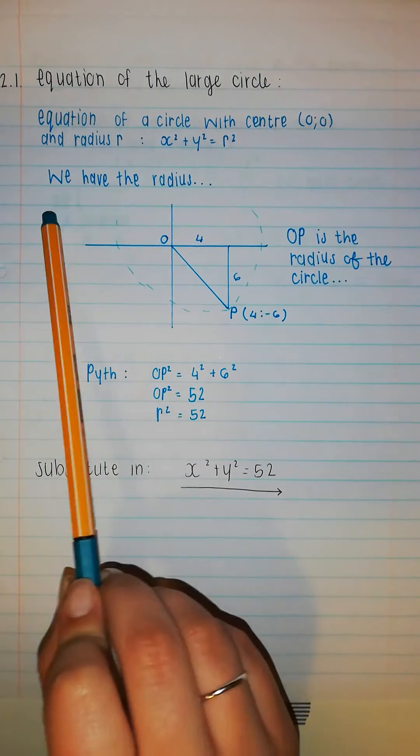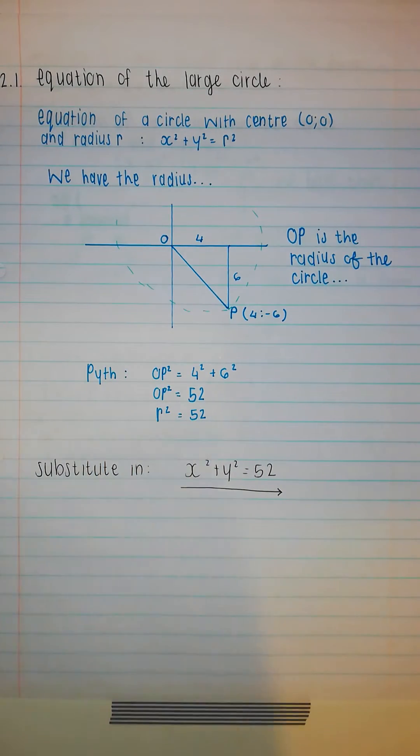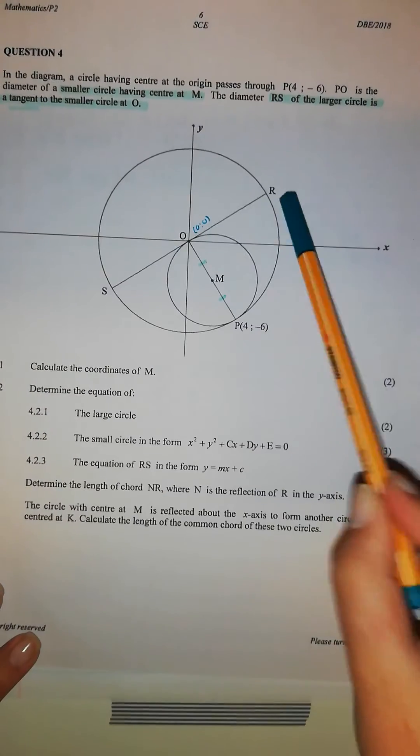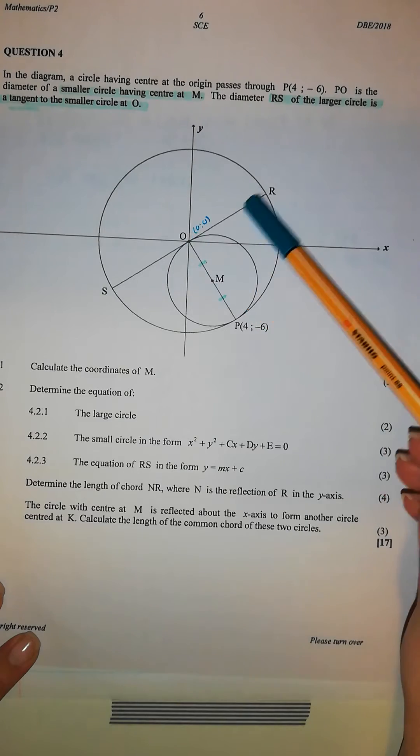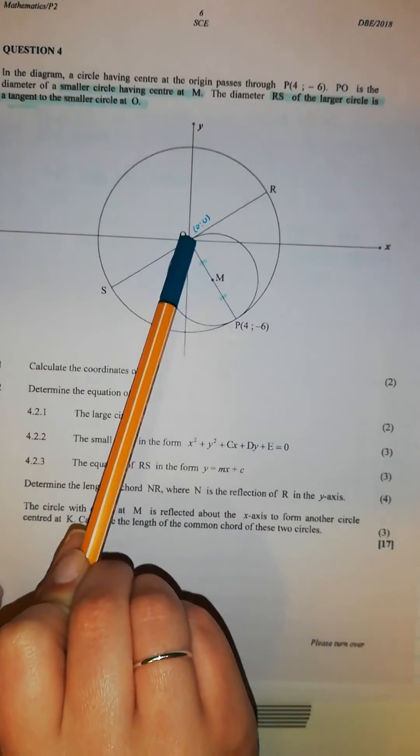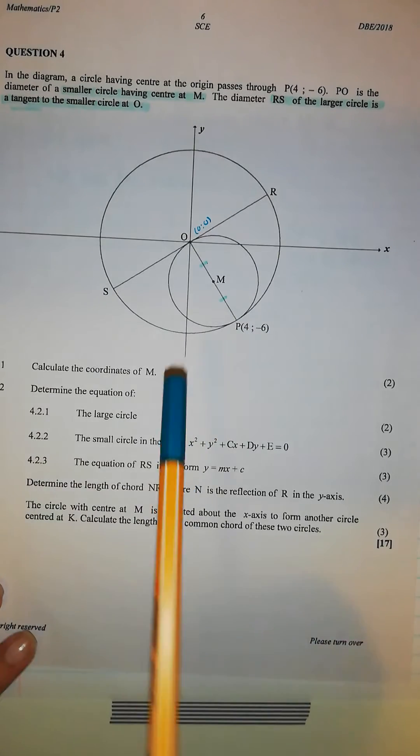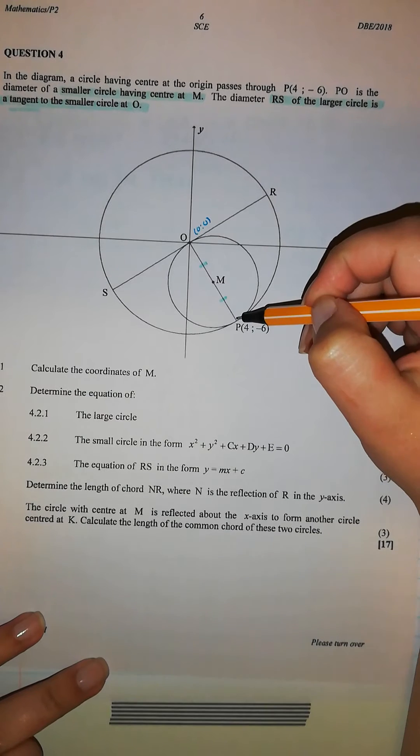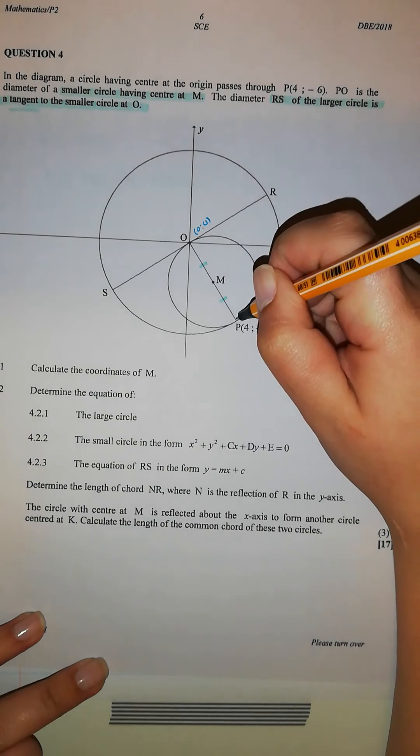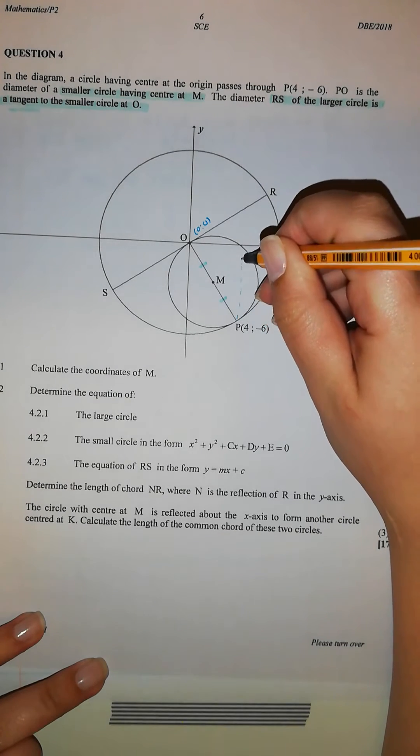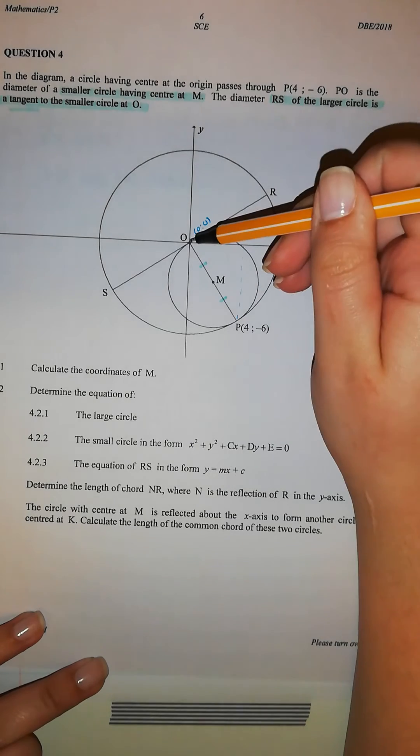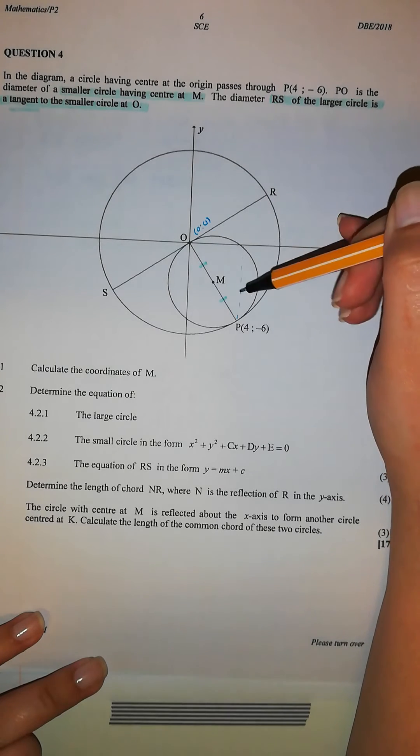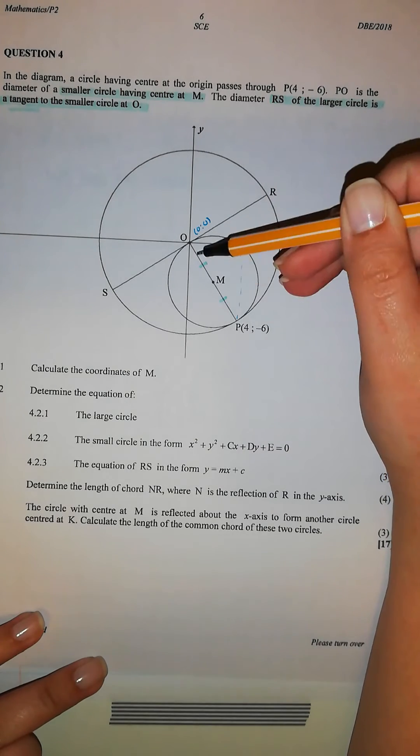Then we have the radius as well. So when you look at this circle, you can see that's the big one, this is the radius, this is the radius, but also OP is the radius. And when we use Pythagoras on this one, if we draw a line straight up here, we can use Pythagoras because we know this is 4 and this is 6 units, and with that we can calculate OP.